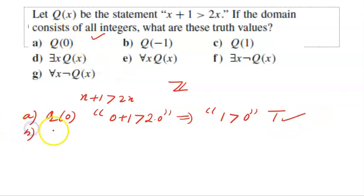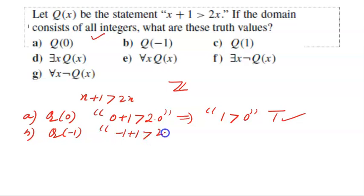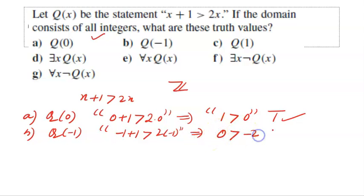For Q(−1): −1 + 1 > 2×(−1), which gives 0 > −2 — this is also correct. So Q(−1) is also true.